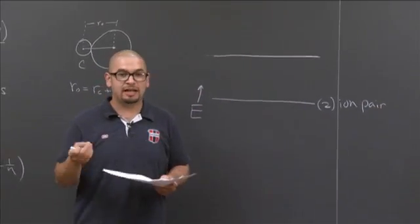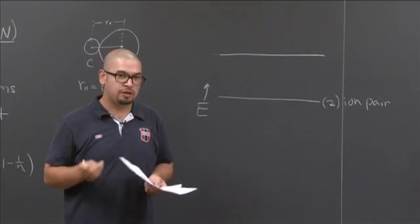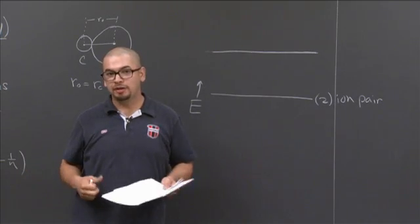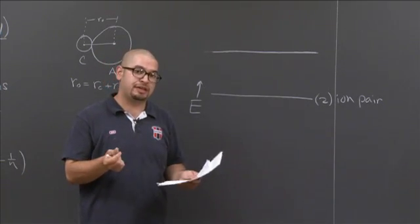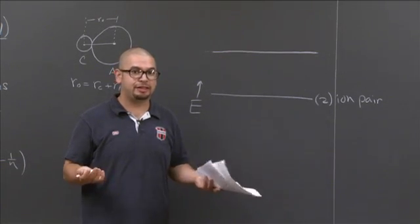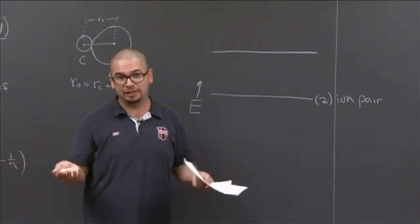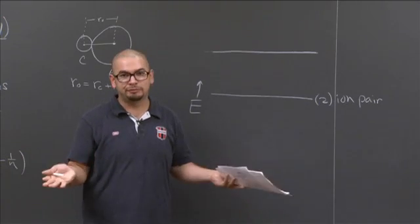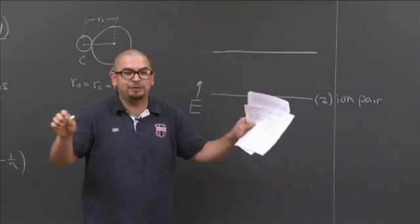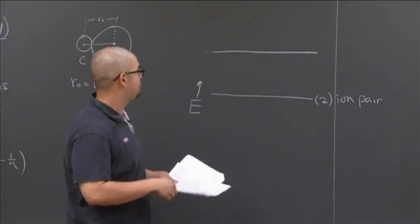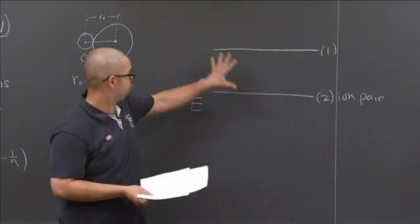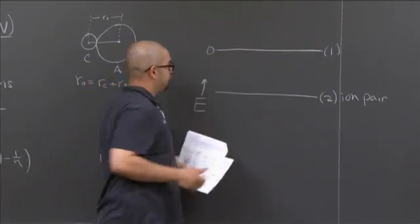Now, number one says ions at infinite separation. What is the energy of some two charged species that are separated by infinity? Well, if you look at your equation, your equation tells you that it's inversely proportional to the separation distance. So if you divide by infinity, your energy should be essentially zero, which makes physical sense because those two charged species can't feel each other when they're separated. So this is actually already my number one, which is zero, separated away.